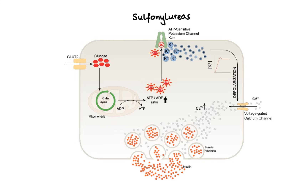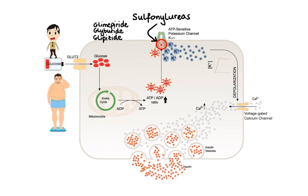Sulfonylureas bind to and inhibit ATP-sensitive potassium channels, which — just like glucose — triggers membrane depolarization, calcium influx, and ultimately insulin secretion. Other actions include increased sensitivity of beta cells to glucose and reduced hepatic glucose production. Examples include glimepiride, glyburide, and glipizide. Common side effects are hypoglycemia and weight gain. Because sulfonylureas are highly protein-bound and extensively metabolized in the liver by cytochrome P450 enzymes, they tend to interact with a wide variety of other drugs.